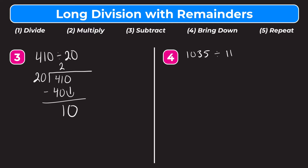Step 5 is repeat, so now we divide. How many whole groups of 20 go into 10? Since 10 is less than 20, that's going to be 0. We write the 0 up here. Step 2 is multiply: 0 times 20 is 0. Step 3 is subtract: 10 minus 0 is 10. Step 4 is bring down, but we've gone all the way to the right in our dividend, so there's nothing else to bring down. Since we have a 10 left over, our remainder is 10. So the answer to 410 divided by 20 is 20 remainder 10.